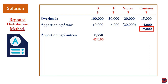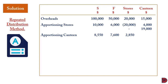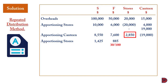We now reapportion the canteen's $19,000: 45/100 × $19,000 to sewing, 40/100 × $19,000 to finishing, and 15/100 × $19,000 to stores. The stores department now has $2,850 and canteen is zero. Since stores still has a balance, we reapportion again at 50%, 30%, 20%: sewing gets $1,425, finishing $855, canteen $570. Stores is zero; canteen now has $570.